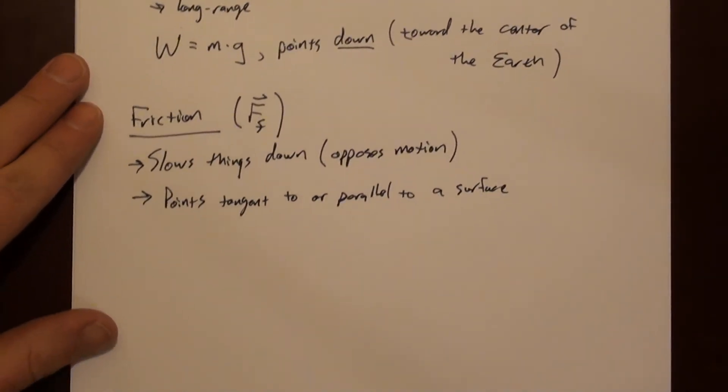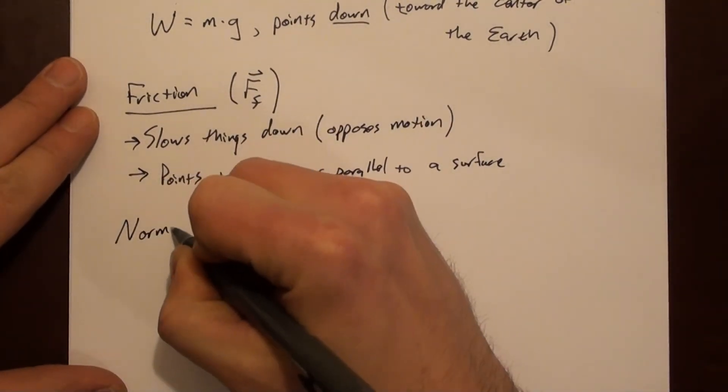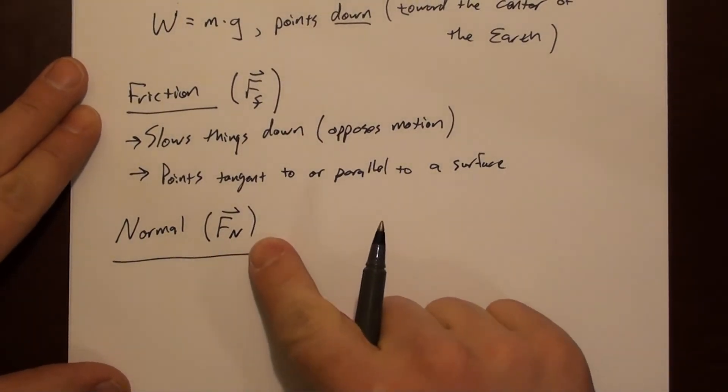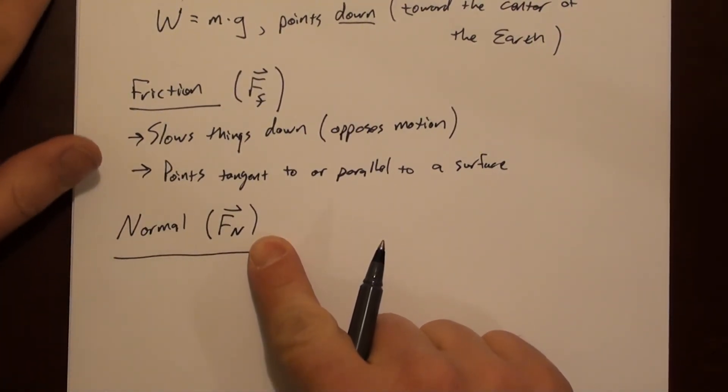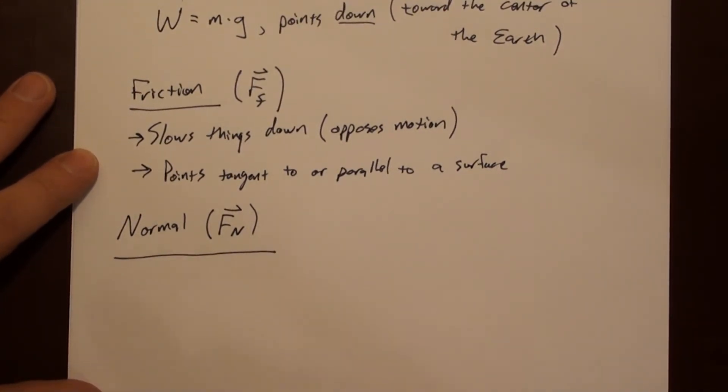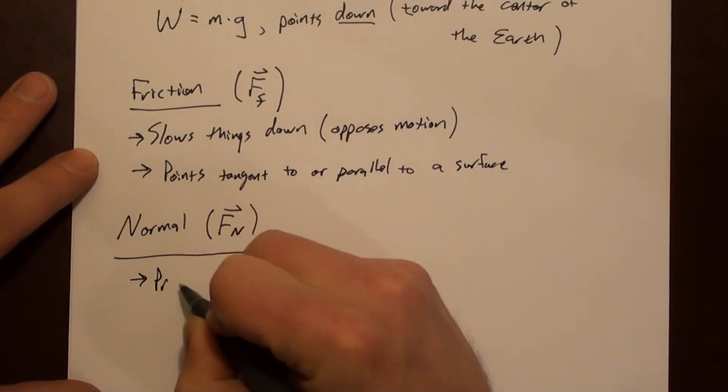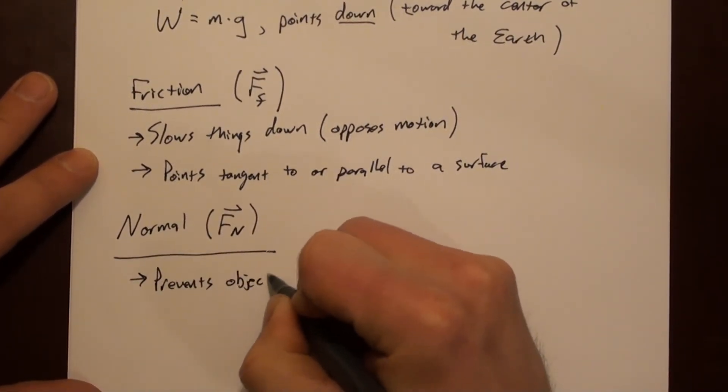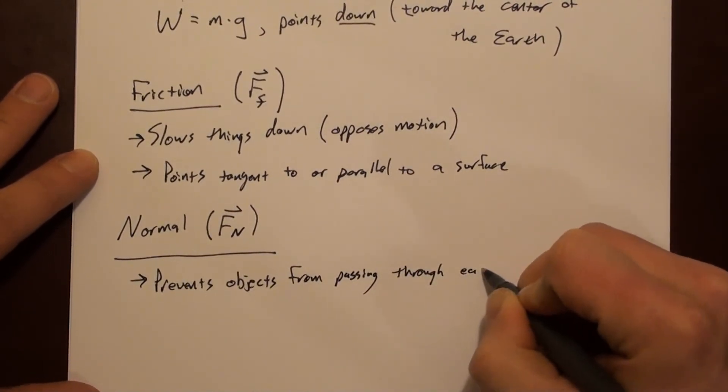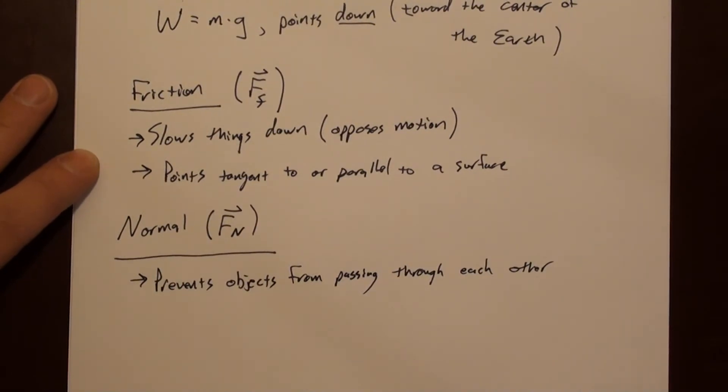Another example of a common force that we'll see is something we call a normal force. Sometimes I use F sub n. These variable names are not set in stone. It's a variable, you can choose whatever you want. But I like to use something consistent so that I don't confuse myself. A normal force prevents objects from passing through each other.